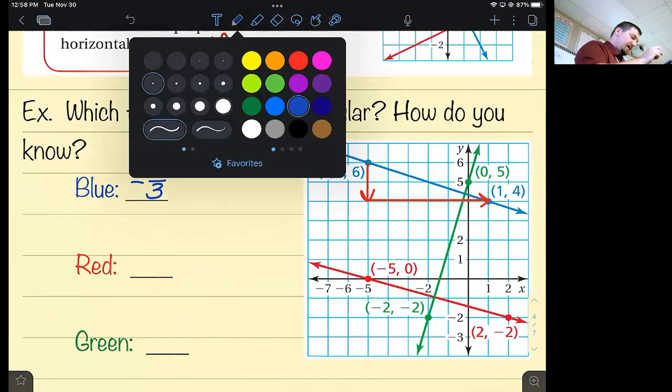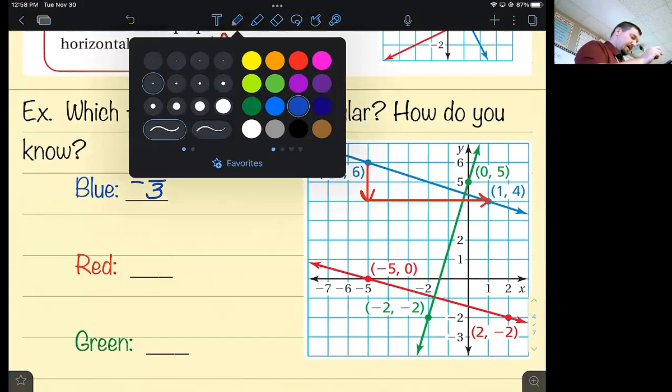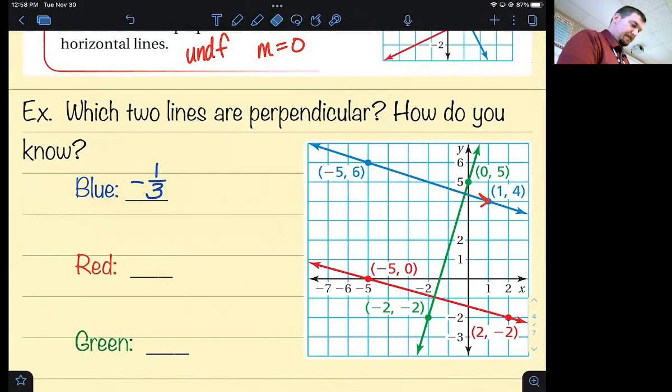The red line has a slope of what? Carter? You should have written it down. Lucy? Negative two over seven. Good. So they're actually very close to each other because one's negative two over six, the other's negative two over seven.